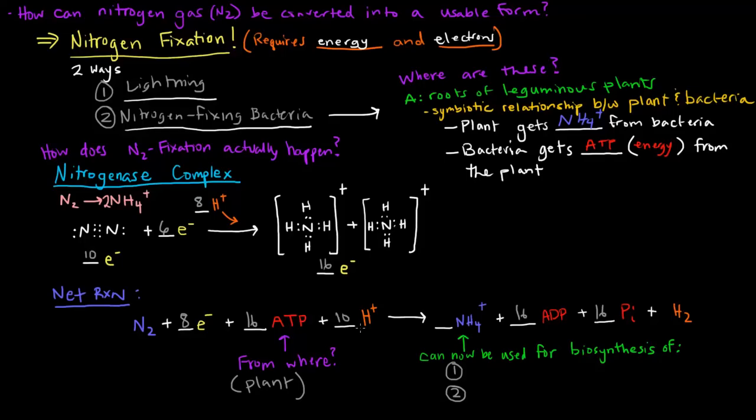Now, we added 10 protons. And that might not make sense just yet, adding eight electrons and 10 protons, because earlier we said six electrons and eight protons. But we'll see what I mean in just a second. We created those two ammoniums, which are now usable. But we also created a hydrogen gas. This hydrogen gas used up two protons and two electrons. So the extra two electrons and the two extra protons were used to make a hydrogen gas.